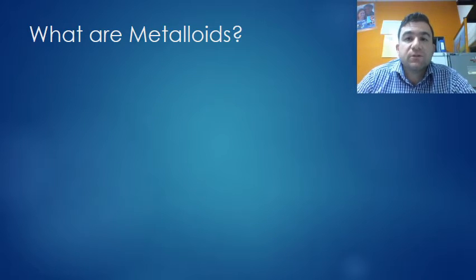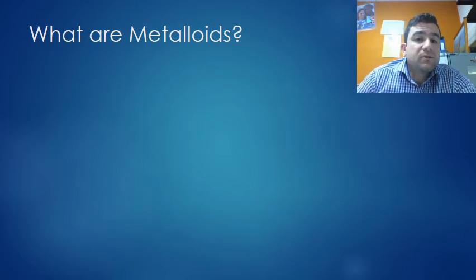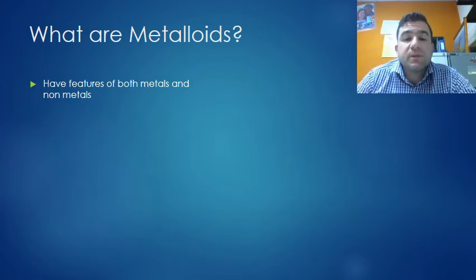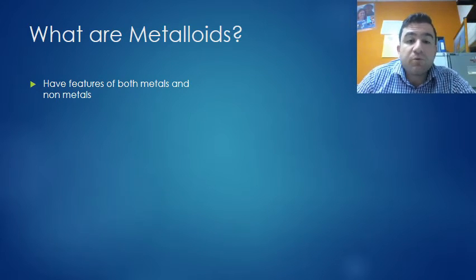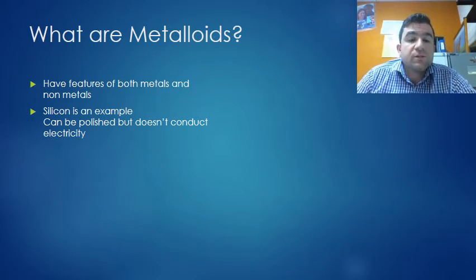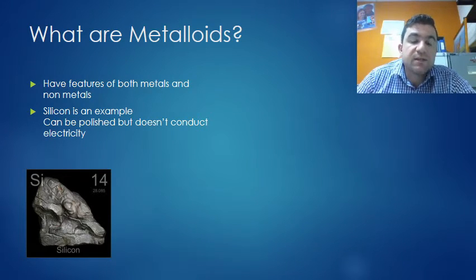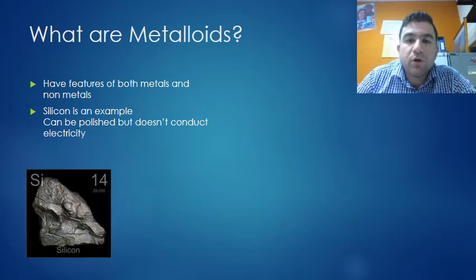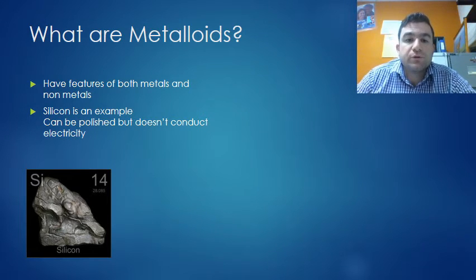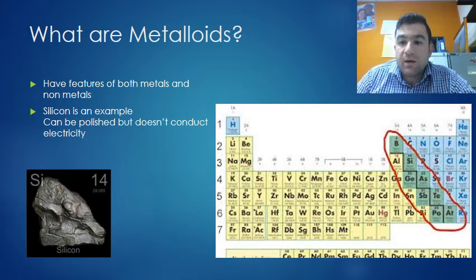What are metalloids? We've got metals and non-metals - well, metalloids have features of both metals and non-metals. Silicon is an example of a metalloid. It can be polished but does not conduct electricity. Silicon is 14 on the periodic table, which means it's got 14 protons.